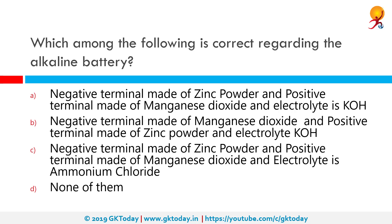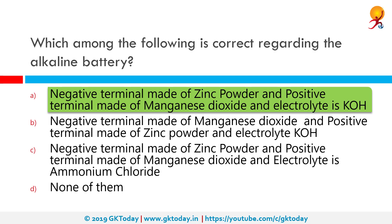Which among the following is correct regarding an alkaline battery? The correct answer is that the negative terminal is made of zinc powder, the positive terminal is made of manganese dioxide, and the electrolyte is potassium hydroxide. An alkaline battery is a type of primary battery which derives its energy from the reaction between zinc metal and manganese dioxide. Compared with zinc-carbon batteries, alkaline batteries have a higher energy density and longer shelf life with the same voltage.